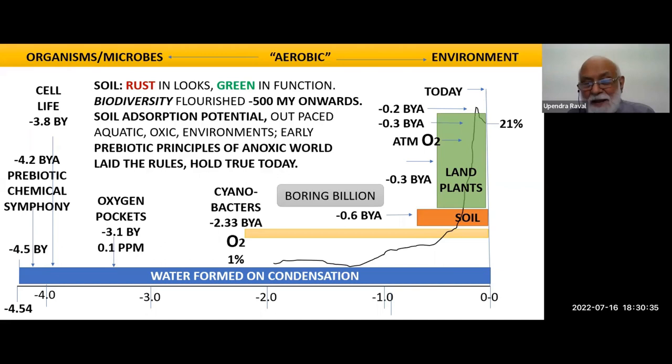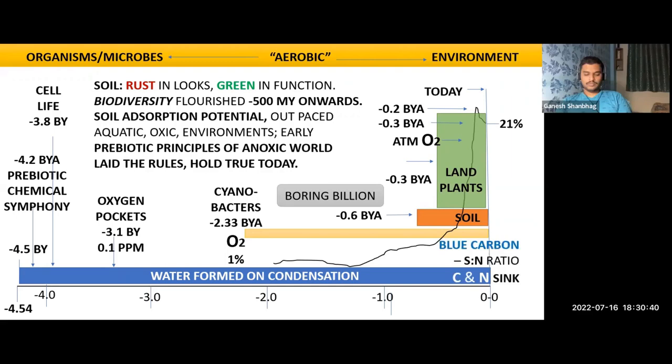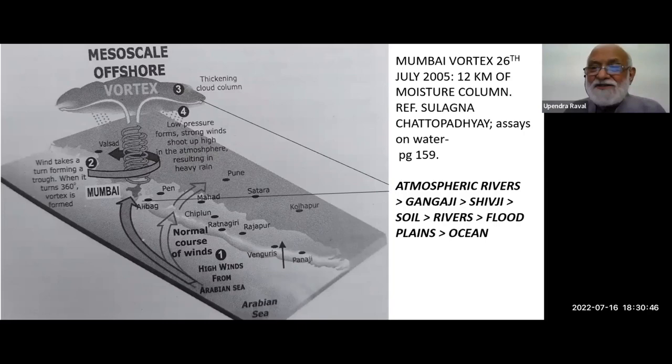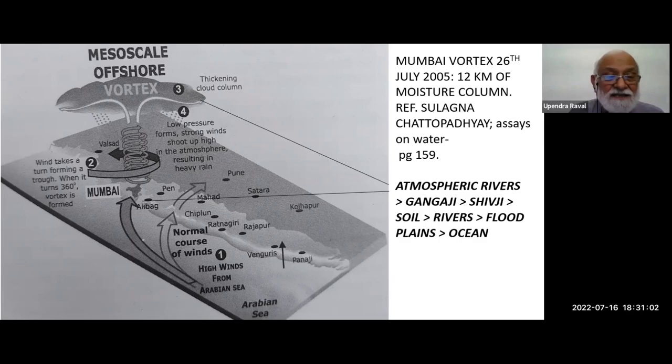All the mechanisms happening in the soil decide the climate we are going to get. This was a cloud — a 12-kilometer moisture column on 26th July 2005. You can call it Gangaji, but there was no Shankara to use his Jata. Atmospheric river to Gangaji, to Shivji, to soil — and soil gave birth to rivers, rivers gave birth to floodplains.